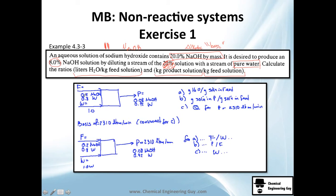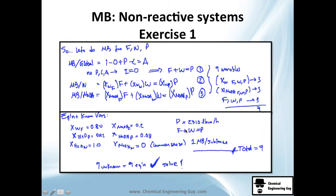Let me show you the diagram. We have a feed stream F of the 20% NaOH solution — amount unknown. We have a water stream W — pure, unknown flow. They mix to produce a product stream P at 8% NaOH — amount unknown. We know both inlet compositions, which is helpful. I recommend setting a basis of calculation: let P equal 100 kg, since part (c) asks for Q at a specific P value. Now let's do the mass balances. For steady state with no reaction: inlet equals outlet.